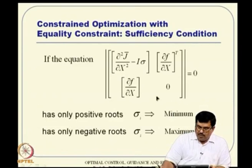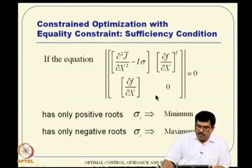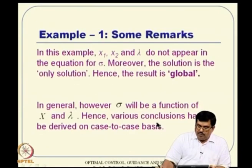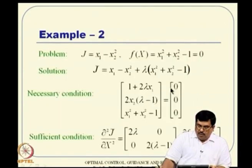Then we moved on to constraint optimization with equality constraints, and told that the problem of minimizing J(x) subject to f(x)=0 is equivalent to minimizing J̄(x, λ) where both x and λ are considered free variables. You construct this function and use the analysis tools for unconstrained optimization, arriving at two necessary conditions. We also went through sufficiency conditions, constructing a matrix and examining its determinant, analyzing the sign sensitivity of all the σ's — if all happen to be positive, it leads to a minimum.